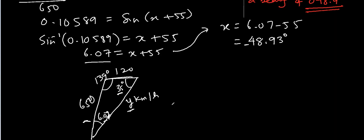And now we can find y kilometers per hour by using sine rule again. So y divided by sine 139 equal to 650 divided by sine 35.